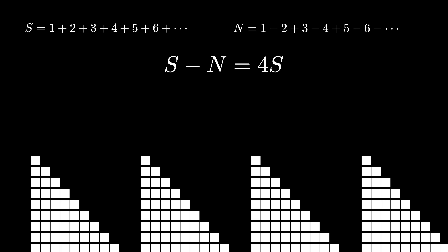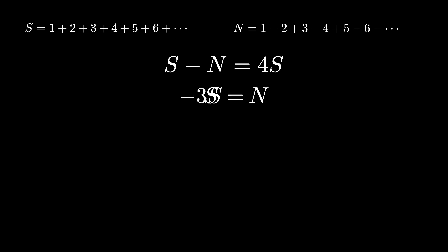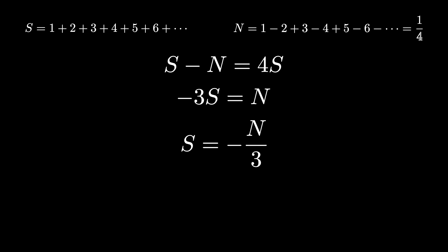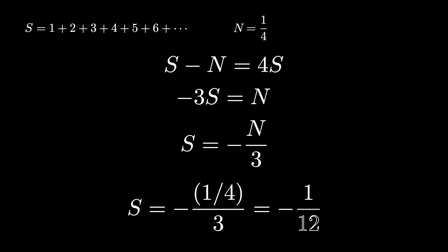This visualization means that S minus N is equal to 4 times S. Using a little algebra: negative 3S equals N, so S equals negative N divided by 3. Since N equals 1 fourth, plugging that in gives S equal to negative 1 fourth divided by 3, which is negative 1 twelfth as promised.